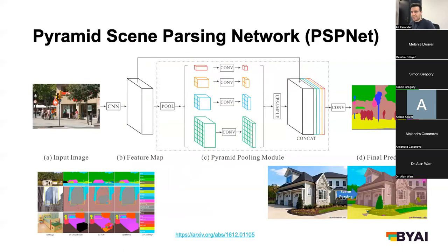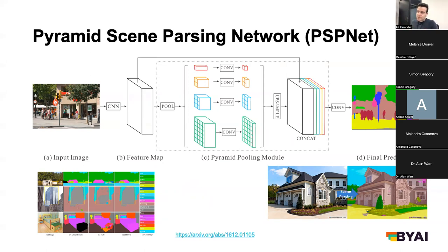After this, researchers came up with more architectures. One very interesting one is called the Pyramid Scene Parsing Network. Instead of using skip connections, as you do your normal CNN convolutional layers, you perform something called pyramid pooling. Pyramid pooling uses different kernel sizes — first a small kernel to scan the image at pixel level, then a slightly bigger kernel to scan again, then even bigger, covering progressively larger areas of the image.